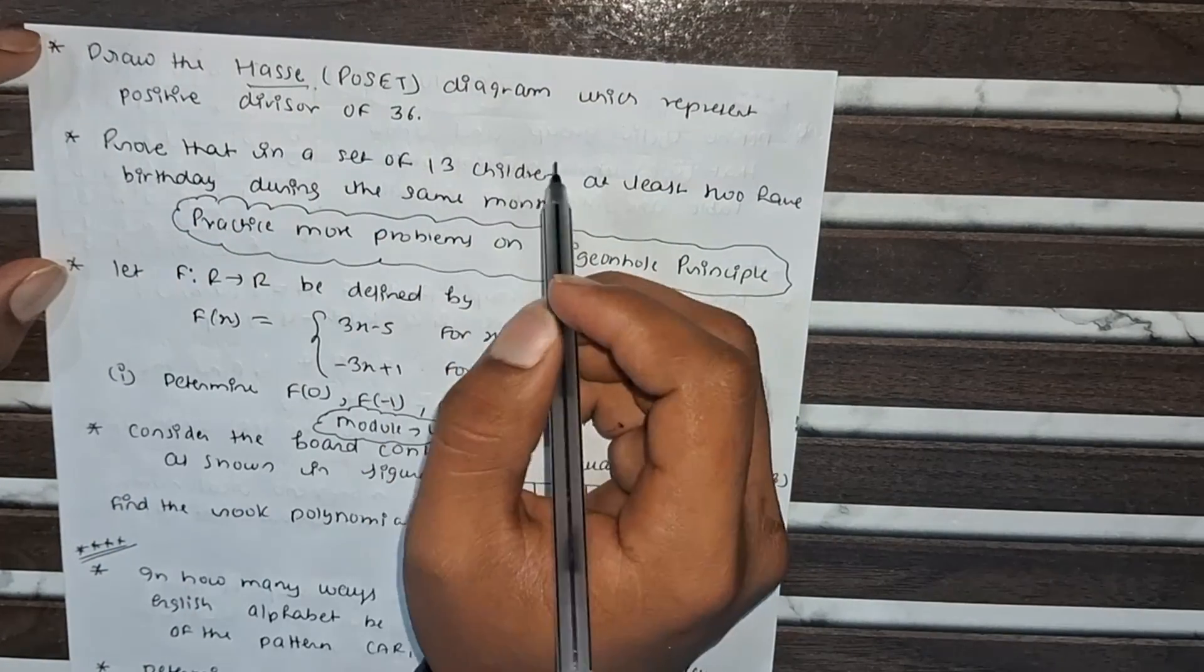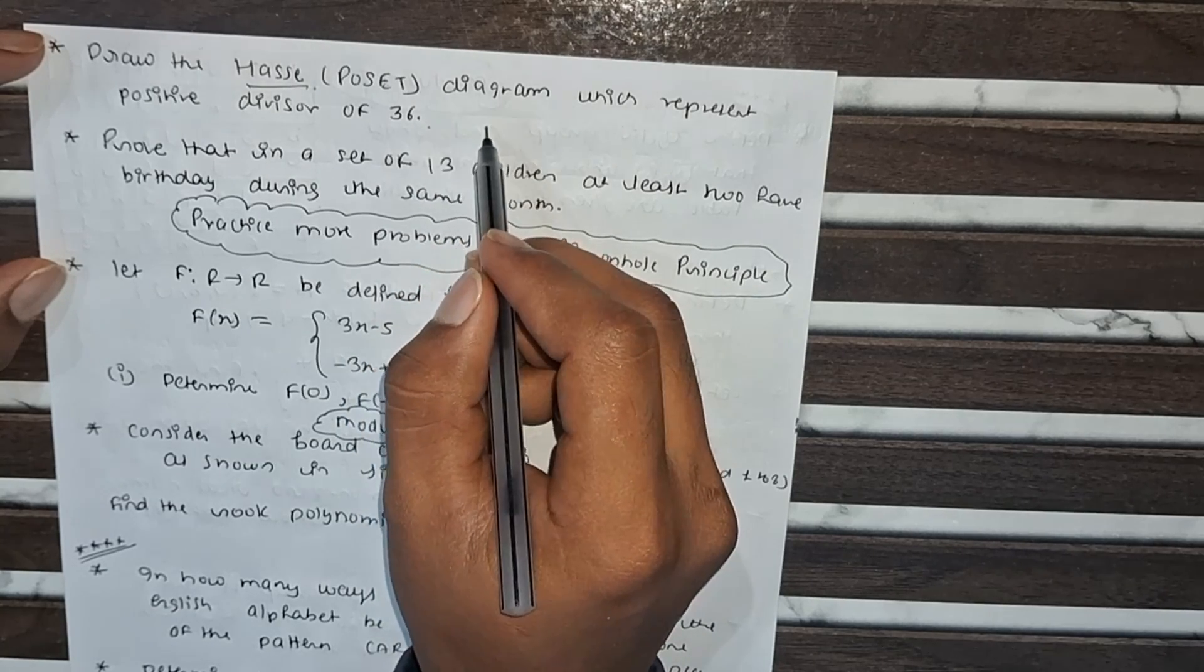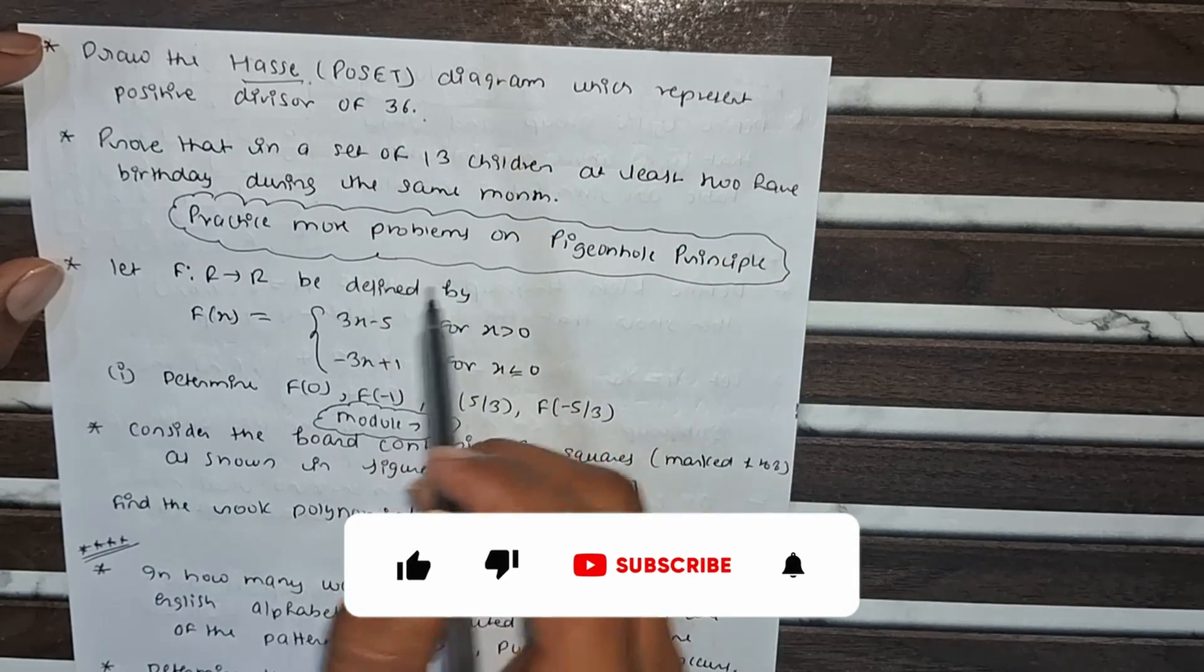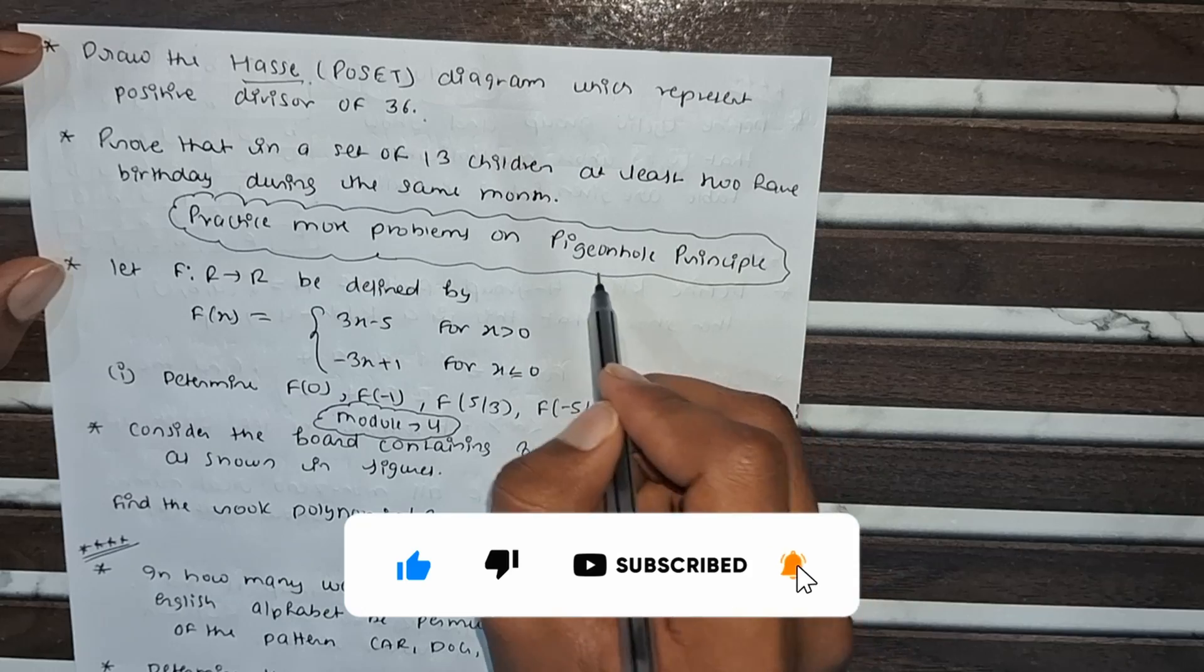One more important problem is Hasse diagrams. You have to solve it for 72, also for 36, 12, and 16 - practice these problems. The pigeonhole principle is another topic, so you have to practice more questions on this principle.